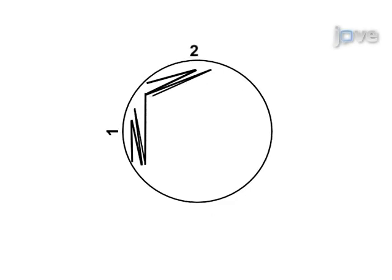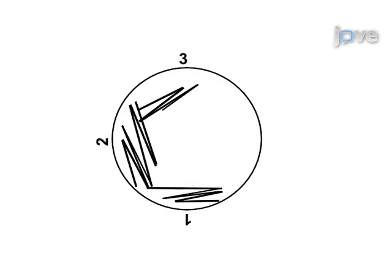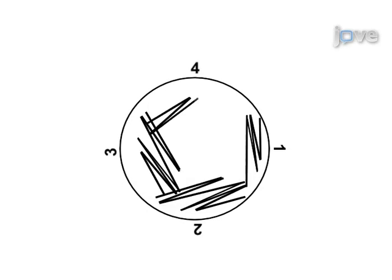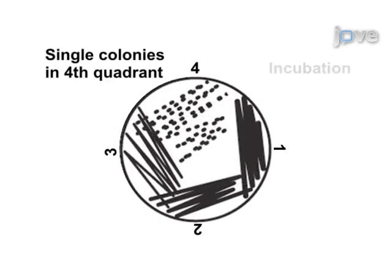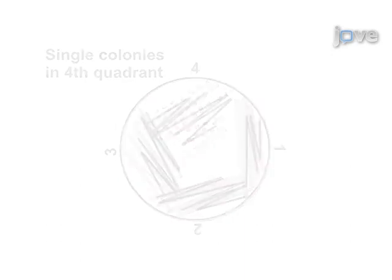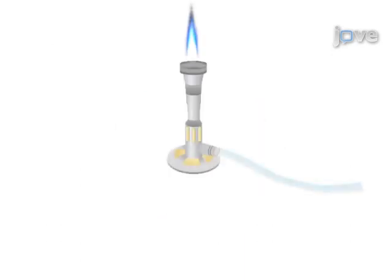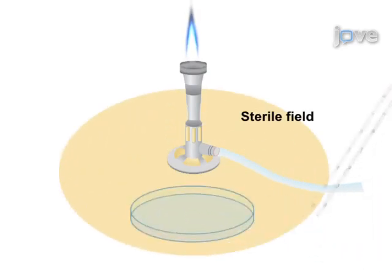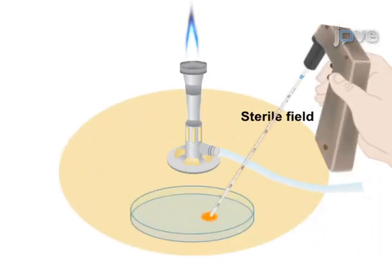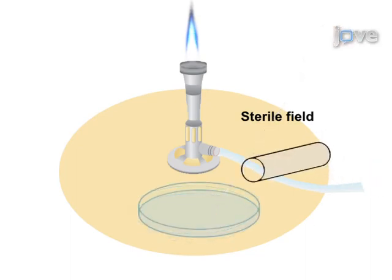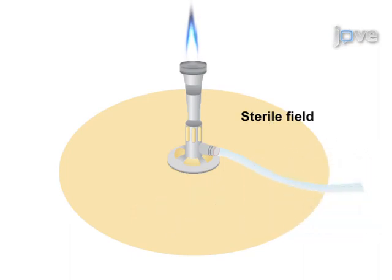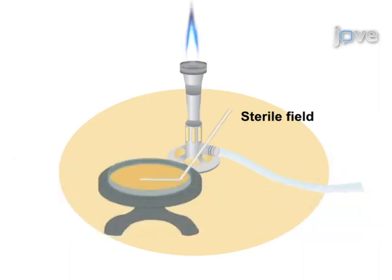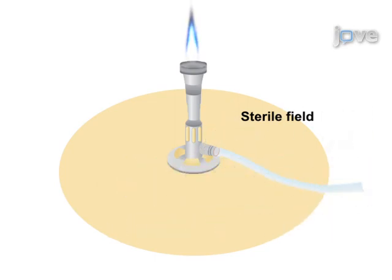Procedures include streak plating bacterial cultures to isolate single colonies, pour plating to determine the concentration of bacteria, and spread plating to enumerate viable bacterial colonies.